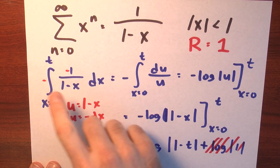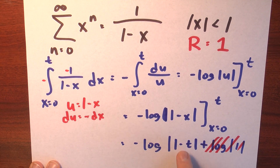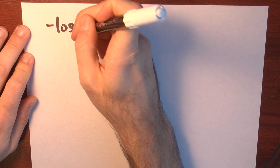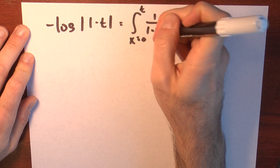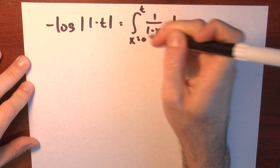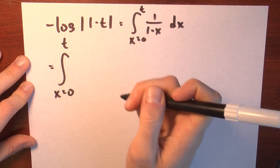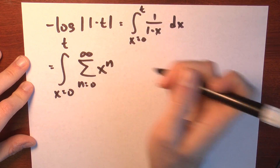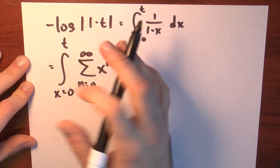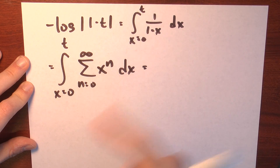All told, if I integrate 1 over 1 minus x from 0 to t, what I'm getting is negative the natural log of the absolute value of 1 minus t. Now we can integrate the power series term by term. So we just showed that negative log of the absolute value of 1 minus t equals the integral from 0 to t of 1 over 1 minus x dx. I'm going to replace this 1 over 1 minus x with a power series — the sum as n goes from 0 to infinity of x to the n — because 1 over 1 minus x equals this series, as long as the absolute value of x is less than 1.